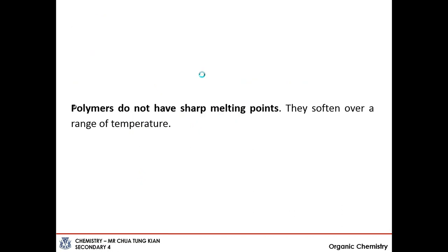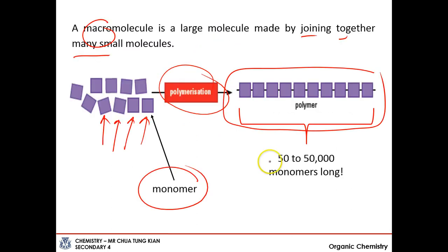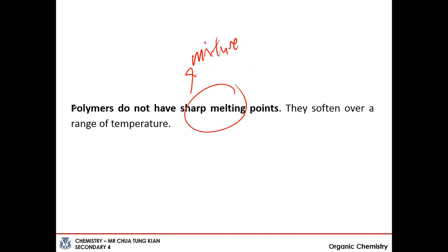Polymers do not have sharp melting points, which means that they are a mixture. Why? Because it can be 50,000, 51,000, 52,000, or even 100,000 monomers long. When all these come together, we get actually a mixture of polymers. There's no way to control the exact length of the chain for the polymer. Hence, polymers are usually a mixture, and as a result, they do not melt at a definite melting point - they melt over a range of temperatures.